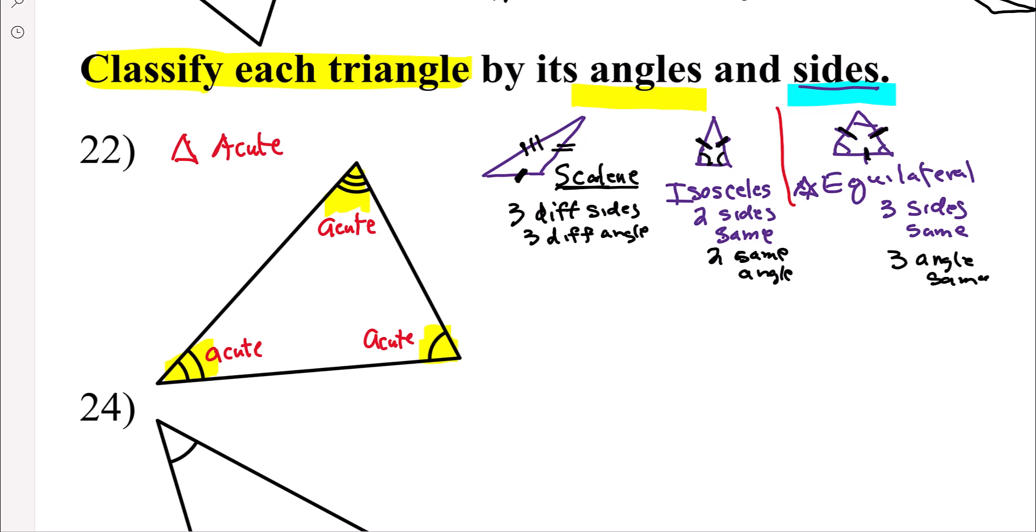But then you also have to look at one arc. So across from here, one tick mark. Two arcs, that means those two angles aren't the same. Two tick marks, three arcs, three tick marks. And now look it, all three sides are different. So this is an acute scalene triangle.